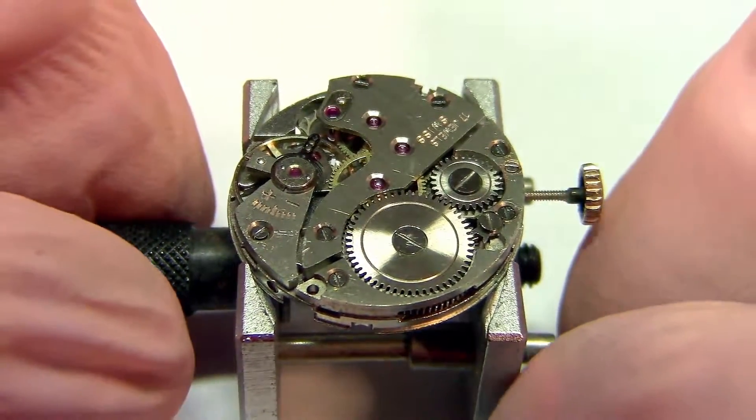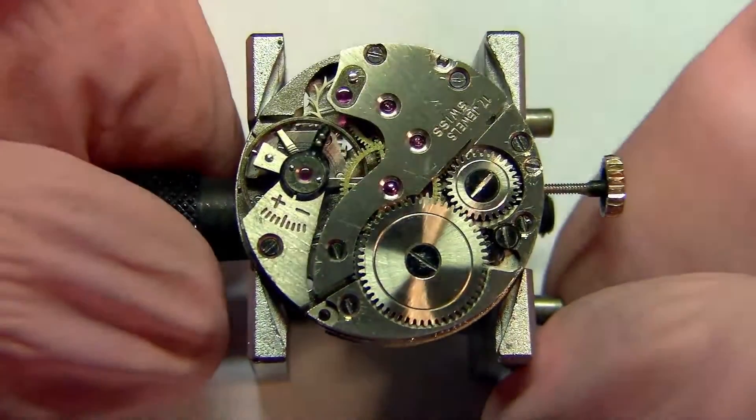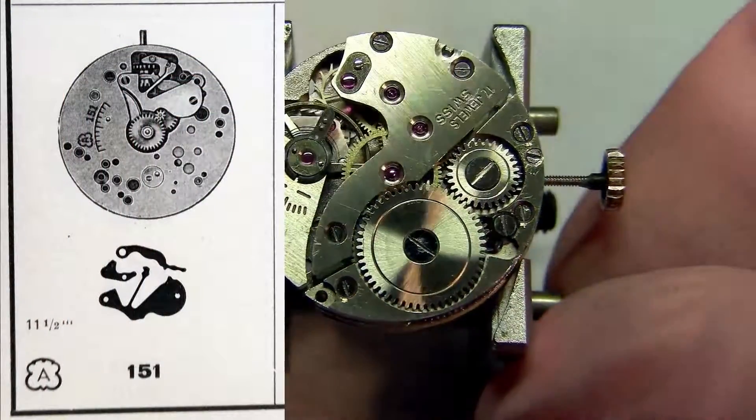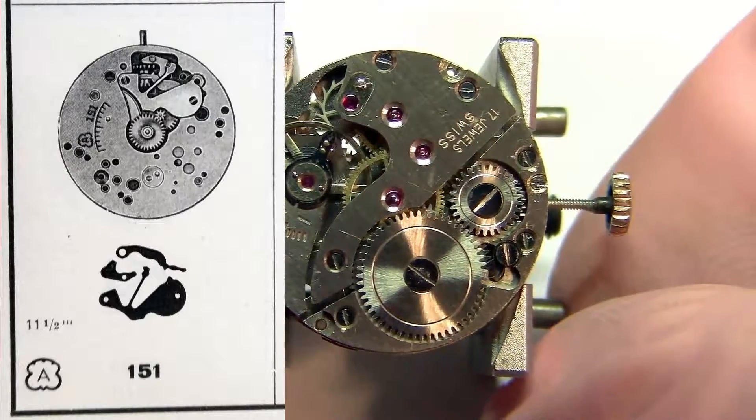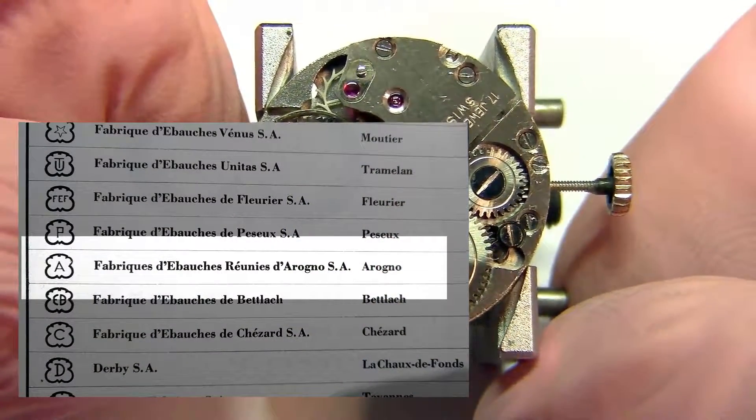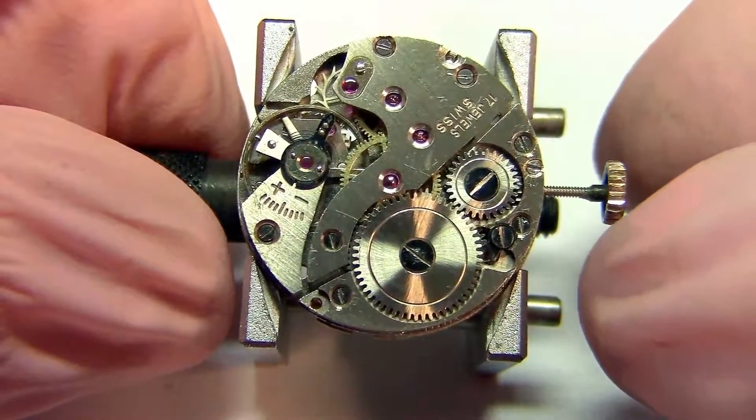And here it is, the movement itself. And in case you were wondering, this is a caliber A151, also known as Aroño 151. It's Swiss-made. As I told you before, it has 17 jewels.